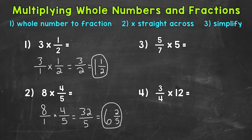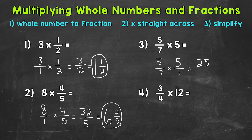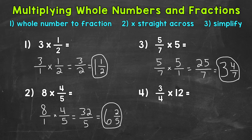Moving on to number three, we have five-sevenths times five. Let's rewrite the problem: five-sevenths times five over one, and multiply straight across. Five times five is 25, and seven times one is seven. Convert that improper fraction to a mixed number: 25 divided by seven. How many whole groups of seven can we pull out of 25? Three, which gets us to 21, so we have a remainder of four. Keep the denominator of seven the same. Our final answer is three and four-sevenths — four-sevenths is in simplest form.